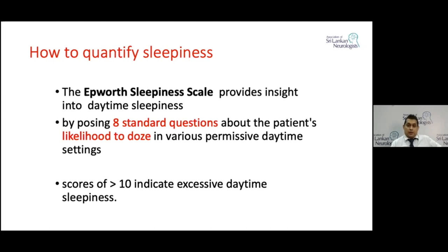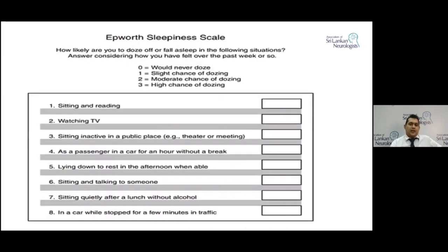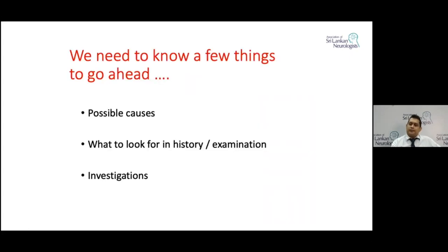The questionnaire has eight questions about the patient's likelihood to fall asleep during various daytime settings: sitting and reading, watching TV, sitting inactive in a public place, as a passenger in a car for an hour, lying down to rest in the afternoon, sitting and talking to someone, sitting quietly after lunch, and in a car while stopped for a few minutes in traffic. The patient indicates never, slight chance, moderate chance, or highest chance of falling asleep in each situation, and a score is given. The maximum score is 24, and a score of more than 10 objectively indicates significant daytime sleepiness.